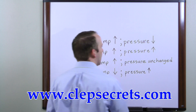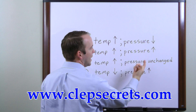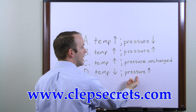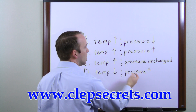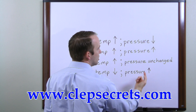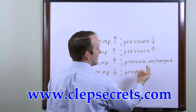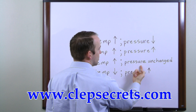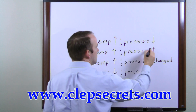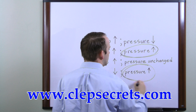Now let's look at the other half of this — what's going on with pressure? We have pressure going down, pressure going up, pressure stays unchanged, and pressure going up. So out of the four choices, two of them have pressure increasing, one has pressure going down, and one has pressure being unchanged. If you were just guessing, you would say the answer was probably going to be one of the two with pressure increasing.